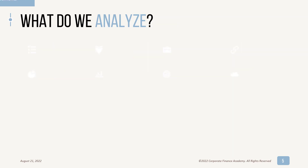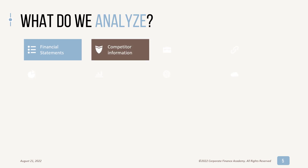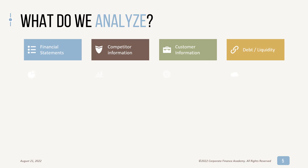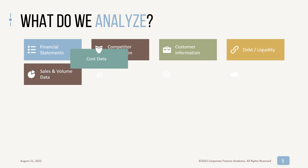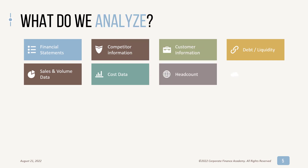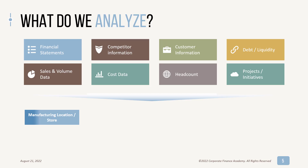So what do we actually analyze? This isn't all-inclusive, but we analyze our financial statements — this could be published financial statements for a public company, but also a subset, a divisional financial statement, or something simpler. We look at competitor information, customer information, debt and liquidity, sales and volume data, cost data, headcount and people information, and we analyze projects and initiatives.